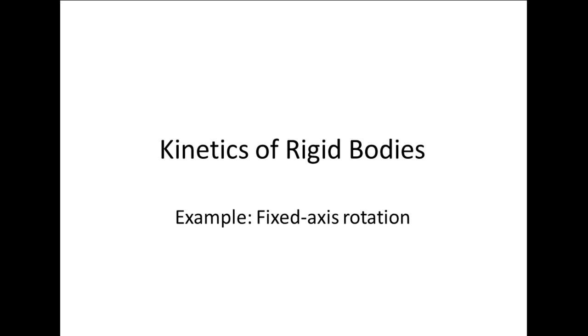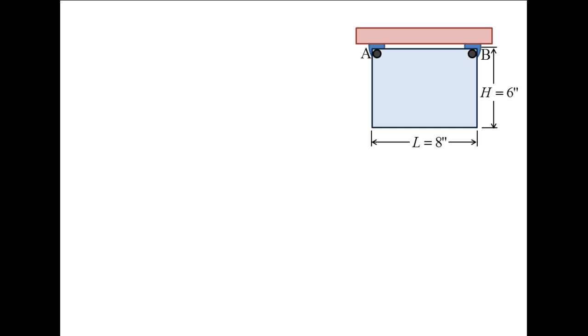In this example, we will examine a rigid body problem involving rotation about a fixed axis. A 6 inch by 8 inch uniform rectangular plate with a mass of two slugs is suspended from two pins at points A and B.